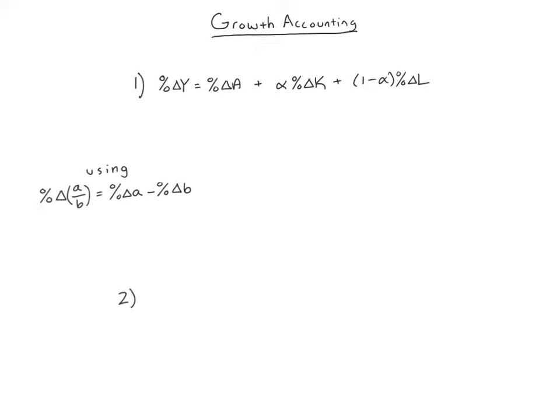So what we'll do is we'll do a little bit of math and transform this equation, number one, into a new equation that we'll call equation number two that tells us about growth and productivity specifically instead of growth in real GDP. So analyzing this equation, it basically says growth in real GDP depends on three factors. The first is the percent change in A, and remember we called A total factor productivity in class, but you should think of it as basically a measure of technological progress or technical knowledge.